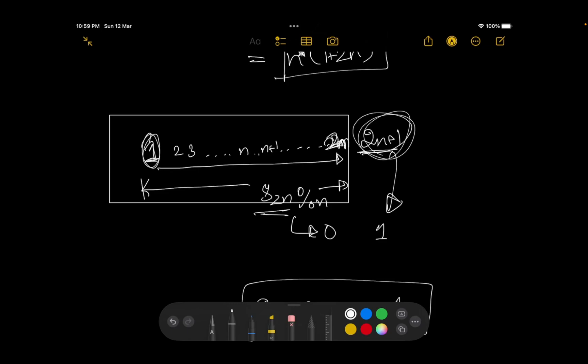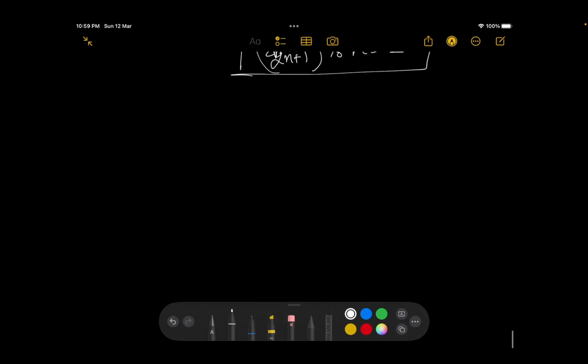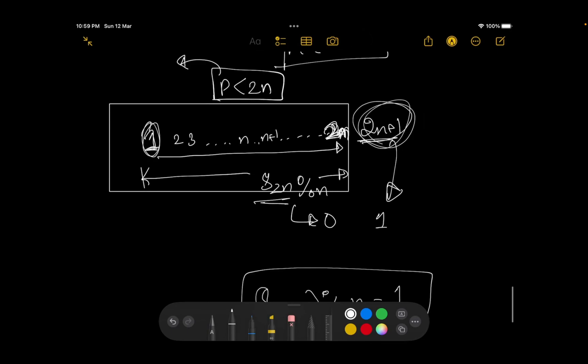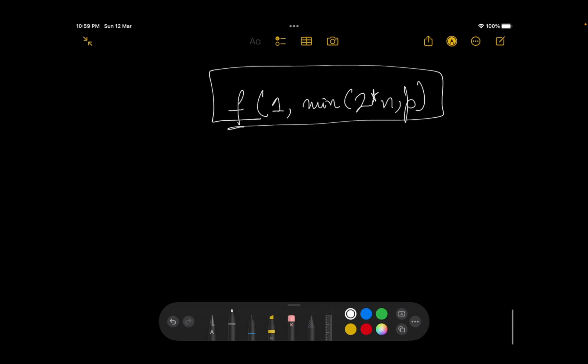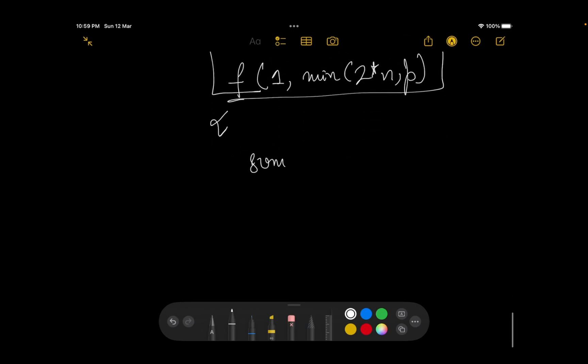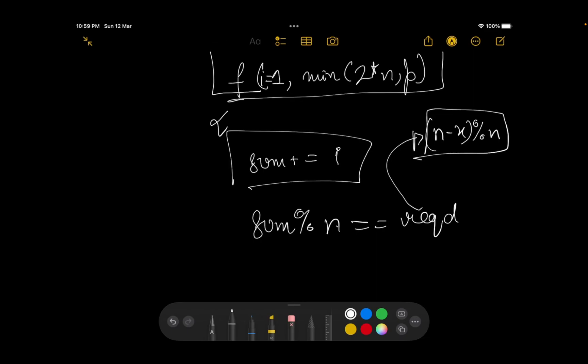Could there be a case that you shouldn't even be traversing to 2n? Yes, there could be a case. So let's say your p is less than 2n and over here, p actually defines what is the maximum force with which you can pull the trigger or you can pull the lever in order to rotate it. So if your p is less than 2n, then you cannot go up to 2n, so you just have to go for a loop from 1 to minimum of 2 into n comma p. You go through this loop, you tell what the sum would be at the current index, so sum plus equal to i.